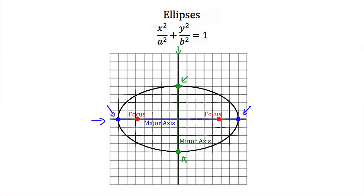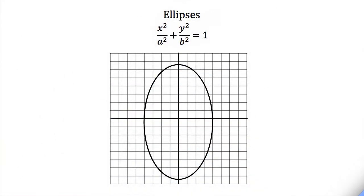Our foci are always on the major axis. Now if the ellipse were stretched further in the y-direction than the x-direction, the y-axis would become the major axis and the x-axis would become the minor axis. At the ends of the minor axis we would have co-vertices, and at the ends of the major axis we would have our vertices. Our foci would then be on the y-axis.